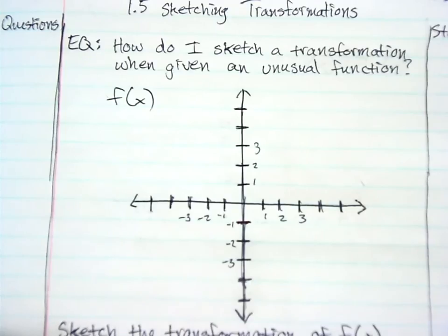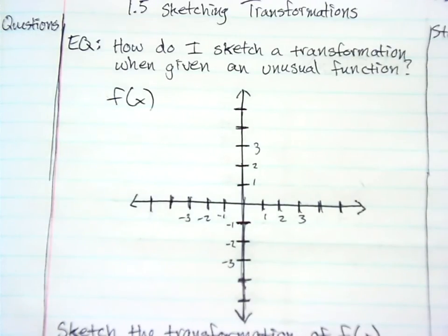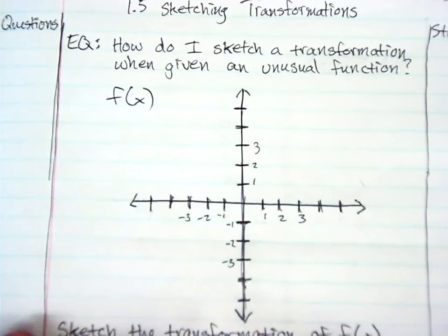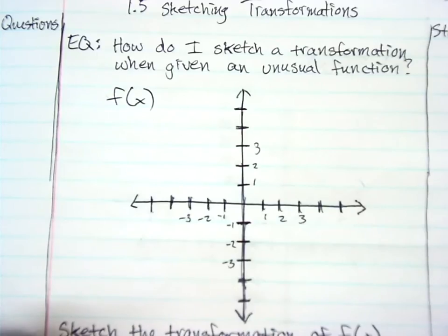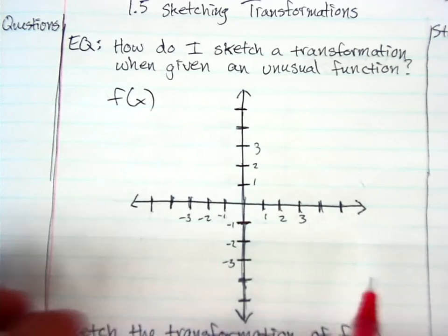But let's go ahead and move forward. Today we're going to be working with functions that are not actually parent functions. We're going to be given what I call unusual functions, and we're going to have to perform a variety of transformations on them based on just what we're given. So go ahead and write down the essential question: How do I sketch a transformation when given an unusual function? This is not the term they call it, but I like to call it that.